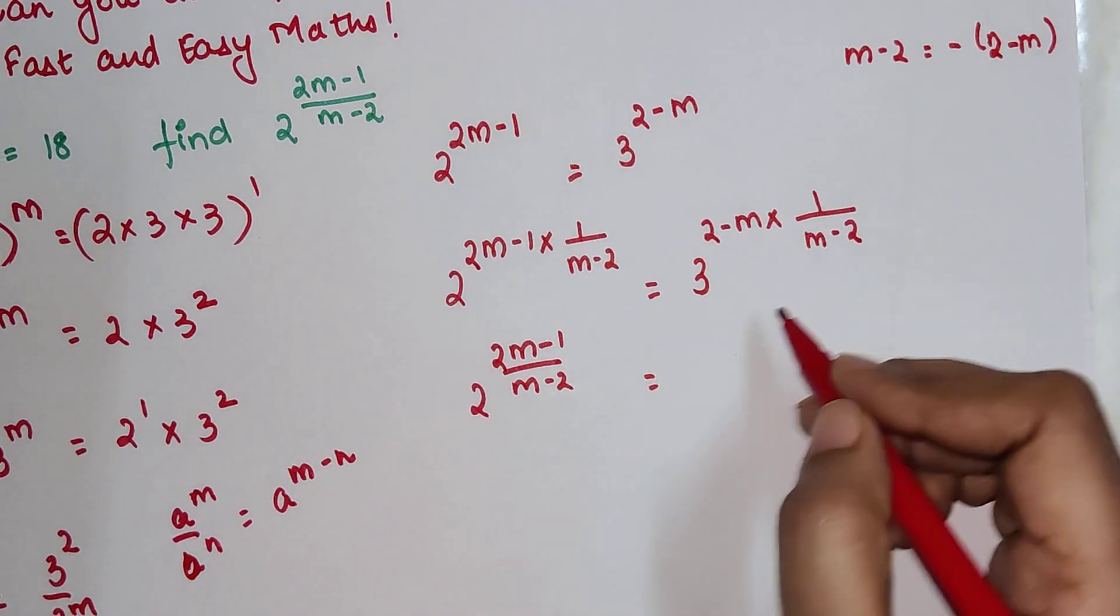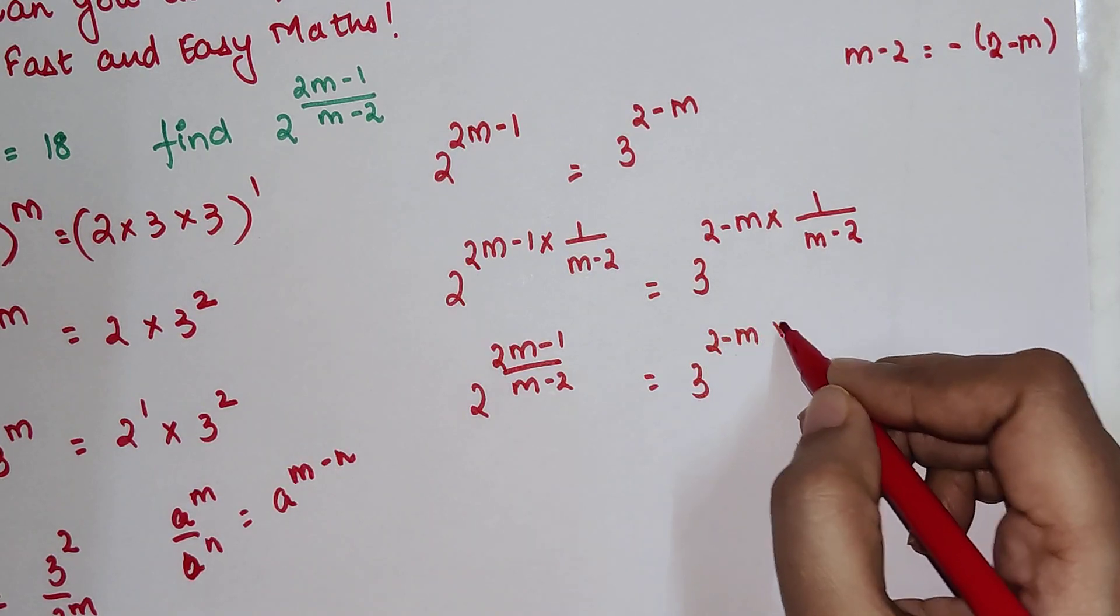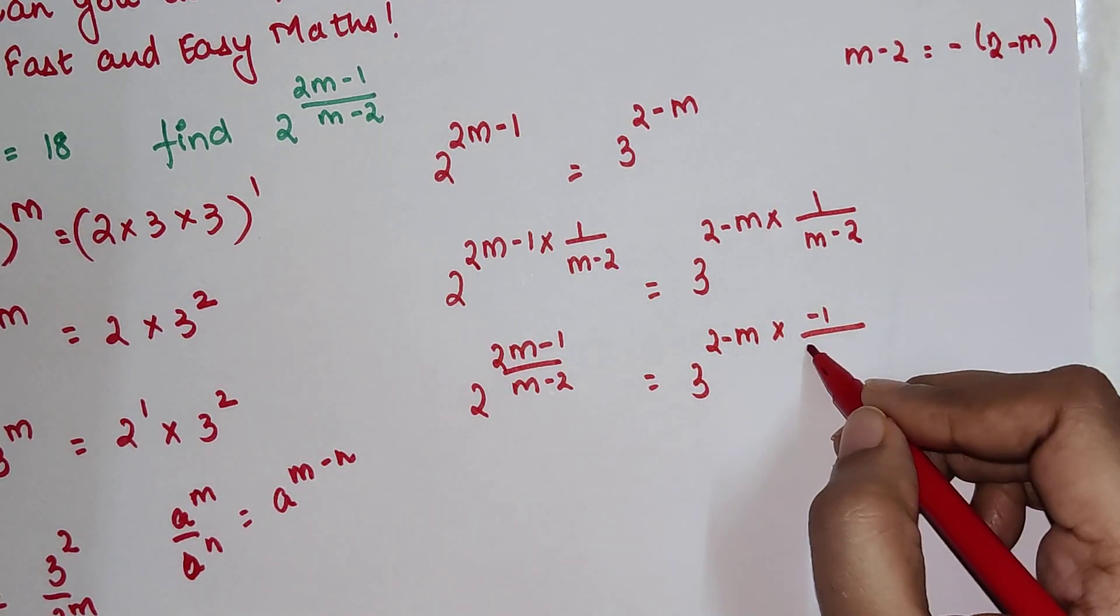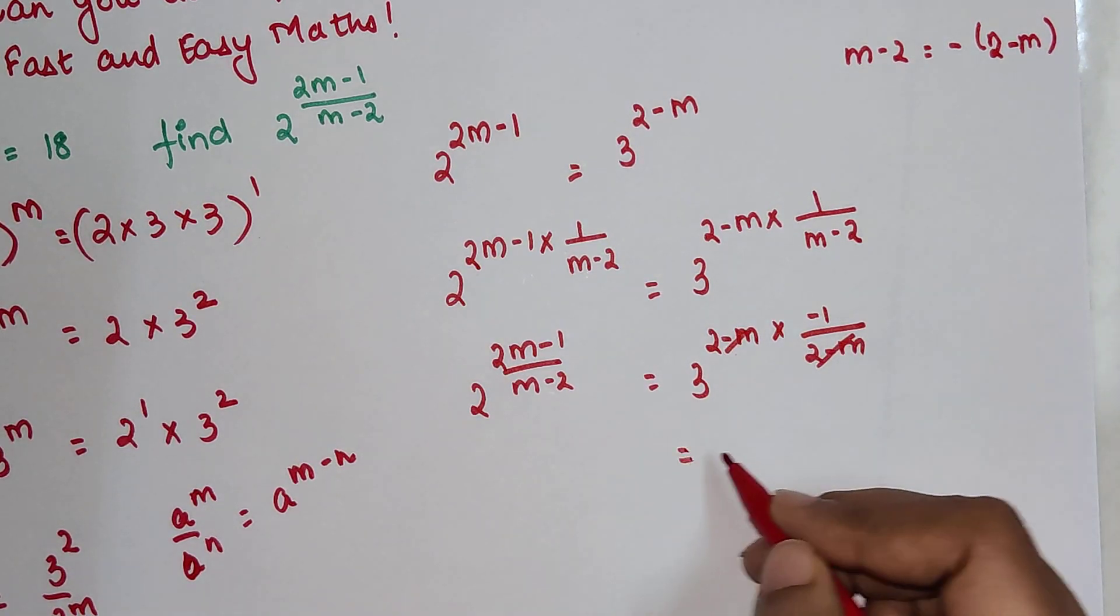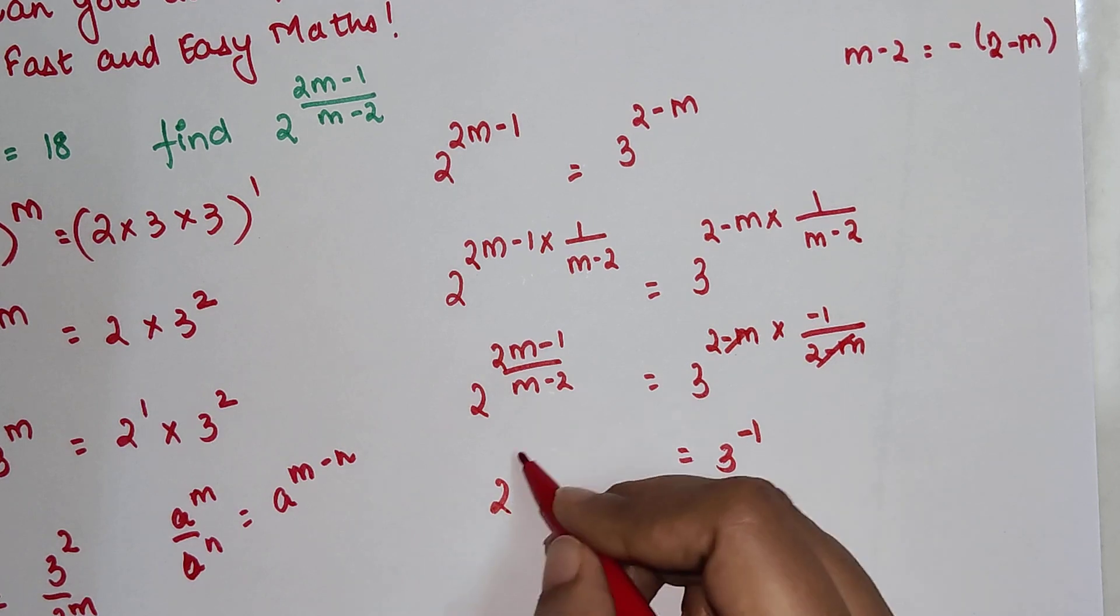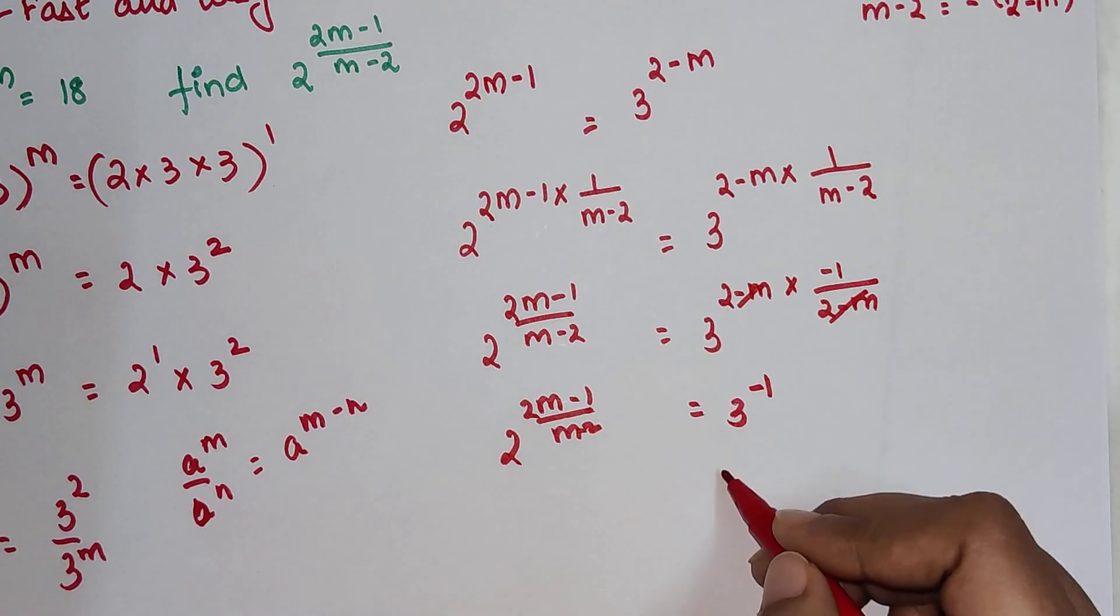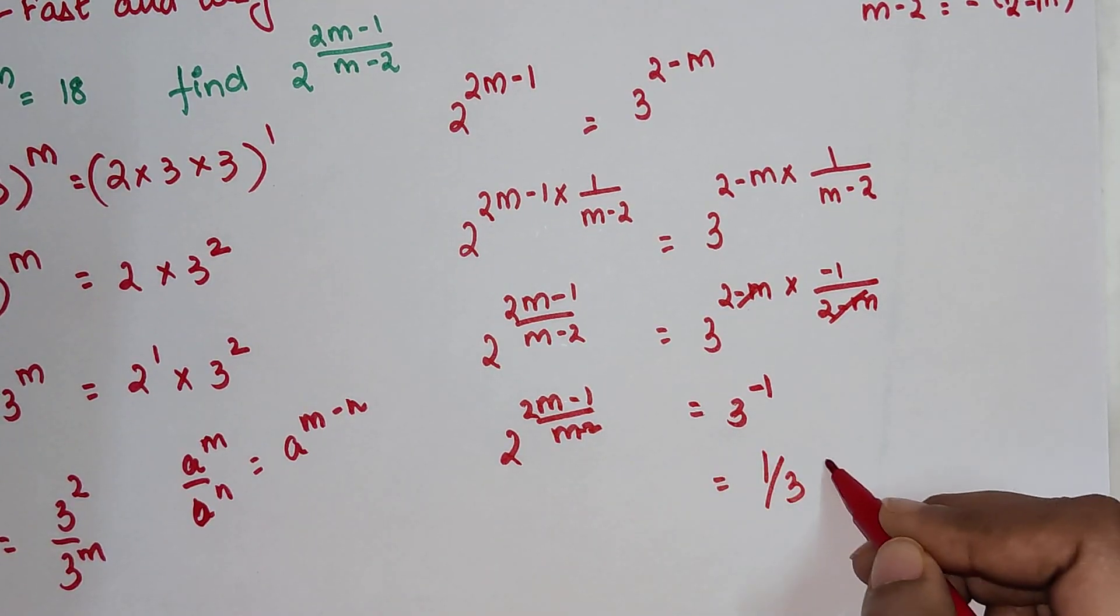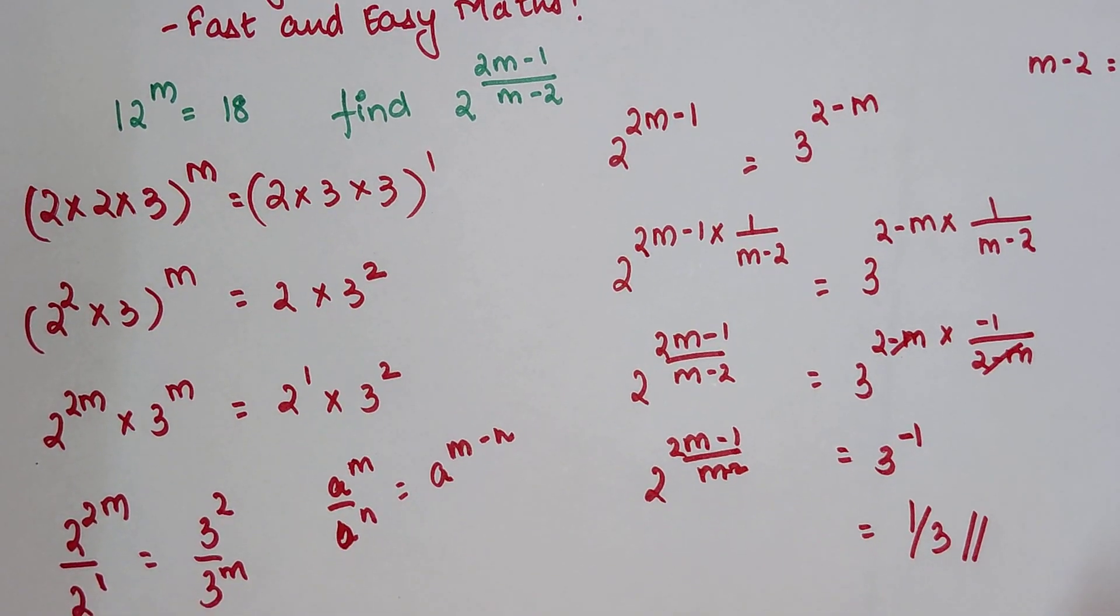So here what I can say: this is nothing but (2-m) times -1 upon (2-m). This will get cancelled, so I will have 3 raised to -1. So the final answer is 1 upon 3. Students, do like, share, and subscribe for many such videos.